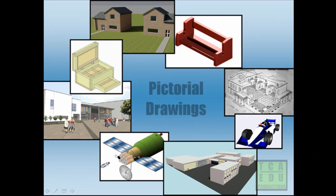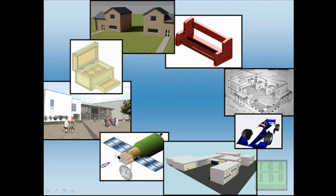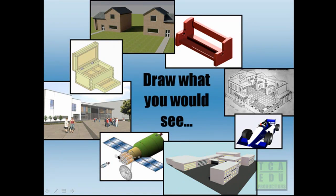So pictorial drawing is basically attempting to represent something as if it was a picture, as if it was a photograph of that object. And that's exactly what the drawer and the designer has attempted to do in the example shown here.